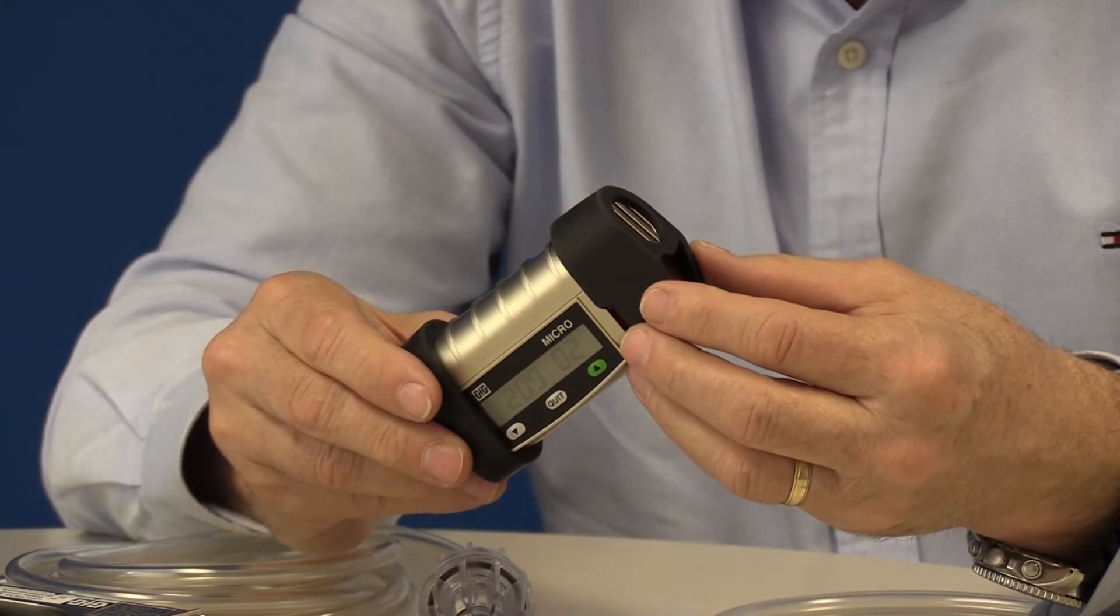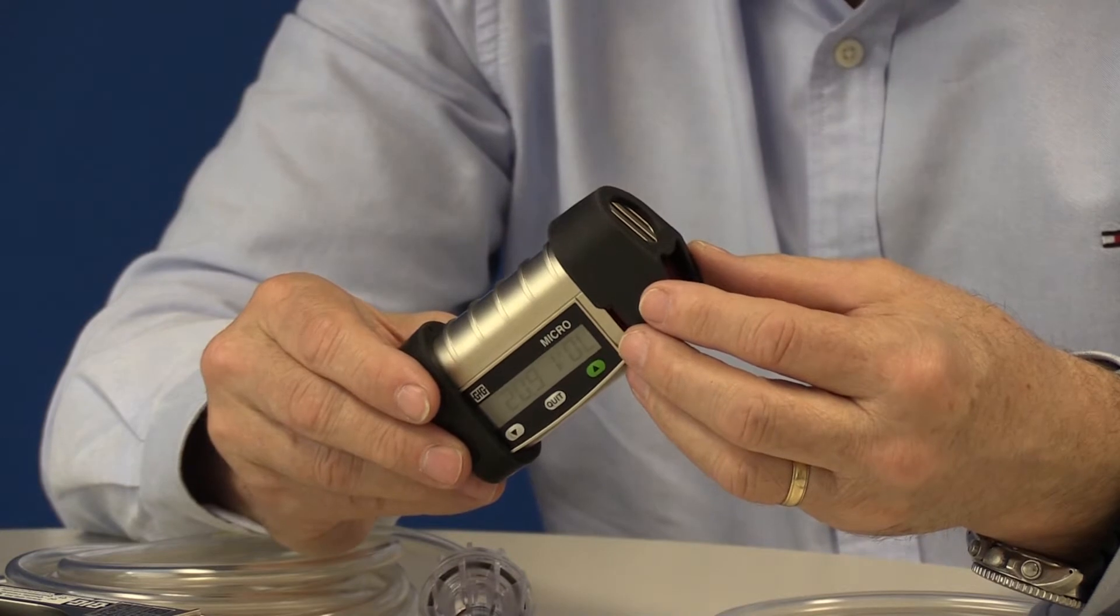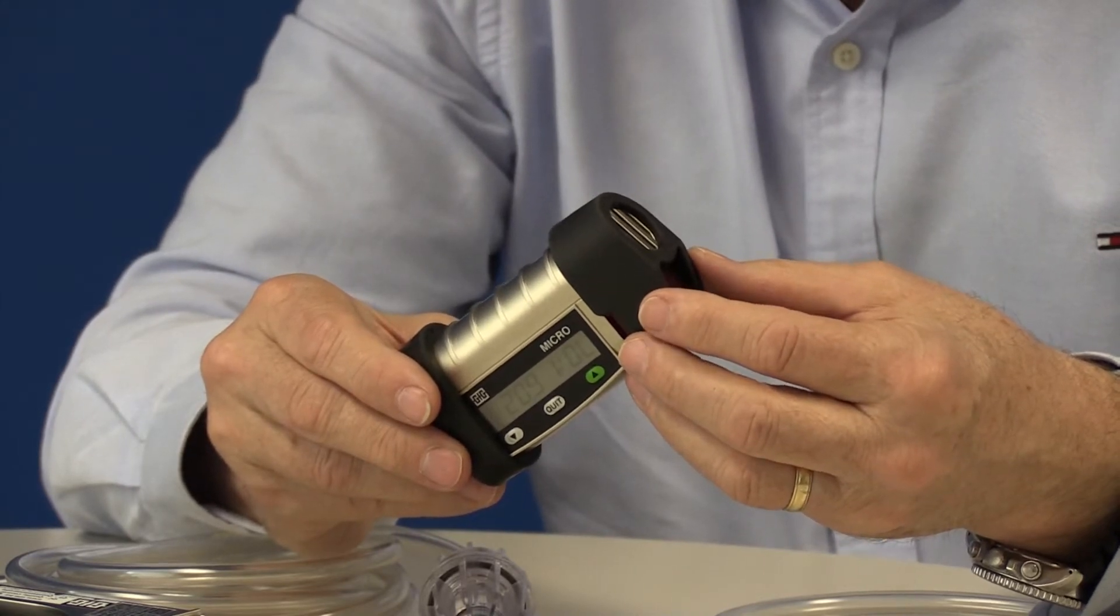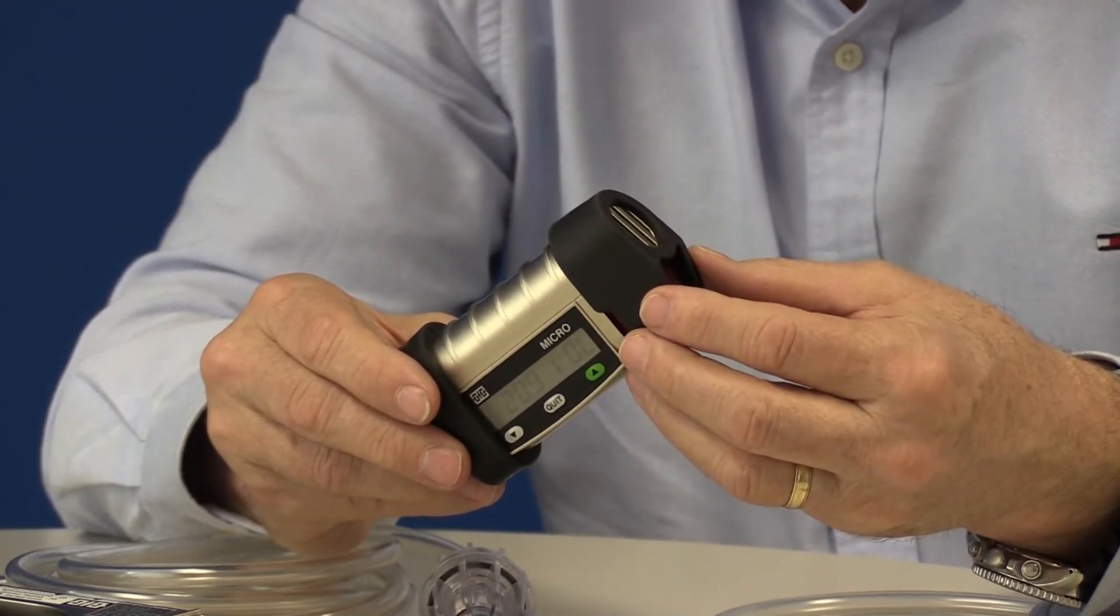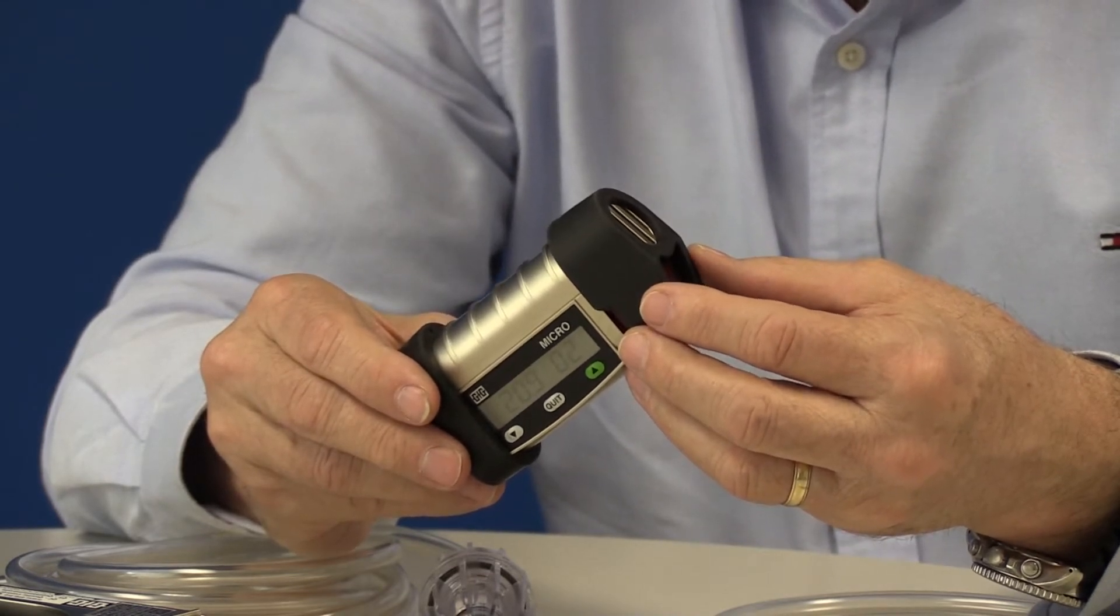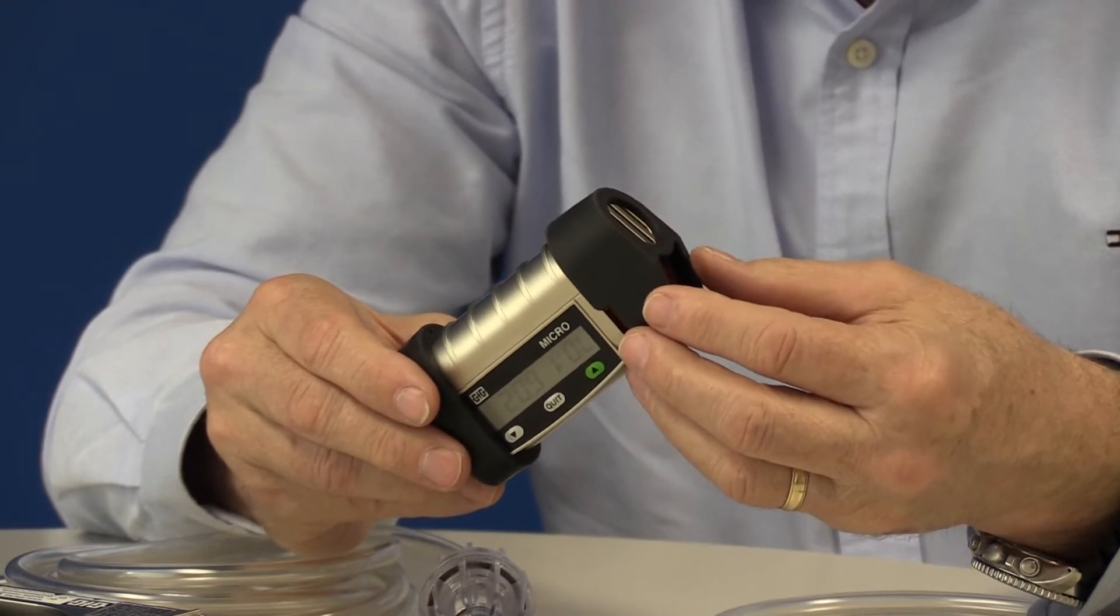Many ranges, many gases. It's a very flexible product. Most of the time the Micro Four is going to be used in simple diffusion operation. What that means is you depend on the currents in the air that immediately surrounds the instrument to help the molecules that are present to diffuse into the sensor where the gas is measured.